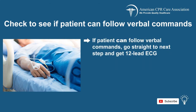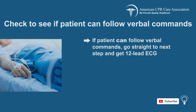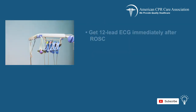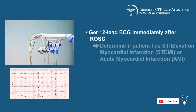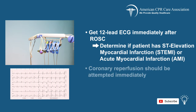But if the patient is in fact able to follow verbal commands, then you should go straight to the next step and get a 12-lead ECG. Get a 12-lead ECG immediately after ROSC to determine if the patient has STEMI or AMI, and coronary reperfusion to restore blood flow should be attempted right away.